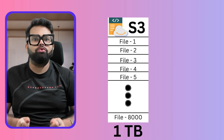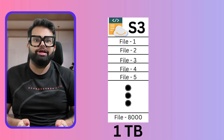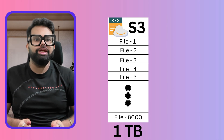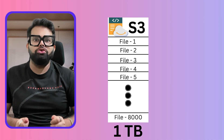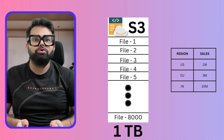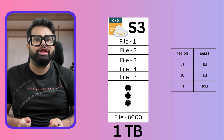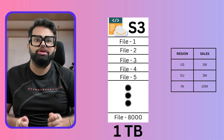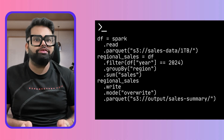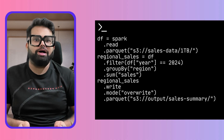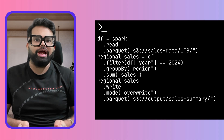Let's say you have 1TB of sales data sitting in Amazon S3. You want to calculate sales by region for year 2024. So you write this in PySpark — just 3 simple lines.